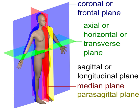The coronal plane is an example of a longitudinal plane, because it is perpendicular to the transverse plane. For a human, the mid-coronal plane would transect a standing body into two halves, front and back, or anterior and posterior, in an imaginary line that cuts through both shoulders.